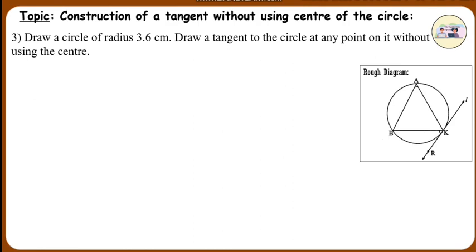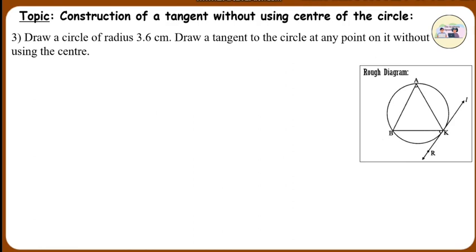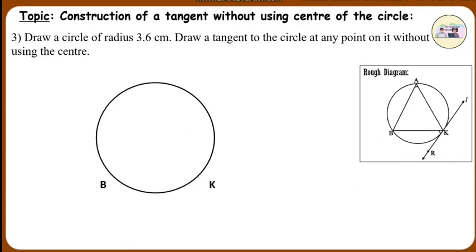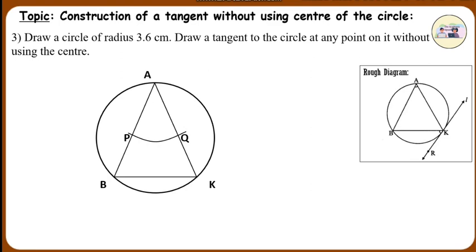Steps of Construction: Draw a circle of radius 3.6 cm. Take any point K on it. Take any point B on the other side of the circle. Draw chord BK and an inscribed angle BAK, so we get triangle BAK. With center A and any convenient radius, draw an arc intersecting the sides of angle BAK at points P and Q.